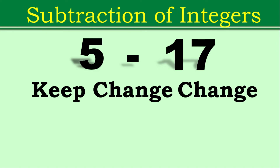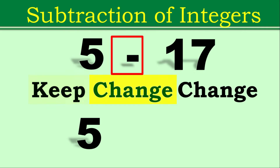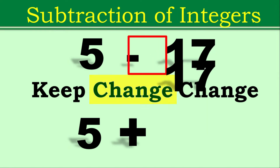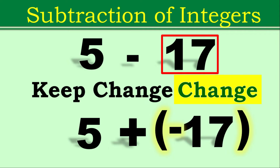In our description box below, I am going to post the reference link for this strategy. Keep, Change, Change. What do I mean by this? We are going to keep the first integer, keeping its sign — so we keep it as positive 5. Second, we will change the operation from subtraction to addition. And the last one, 17, we will change from positive 17 to negative 17.